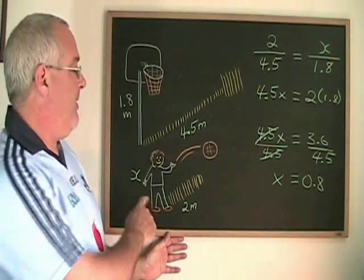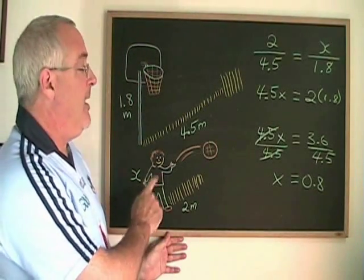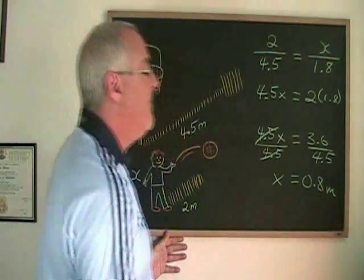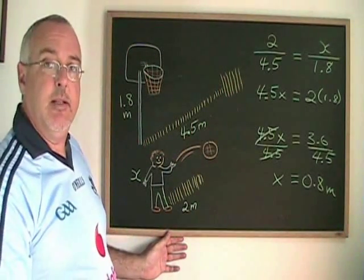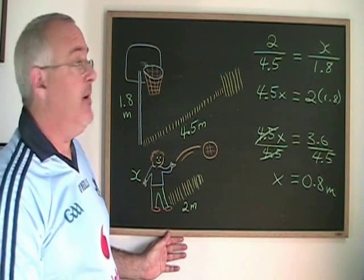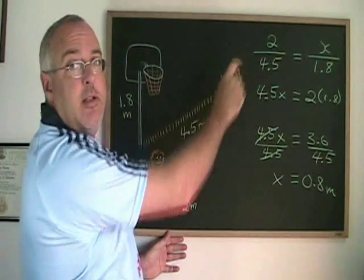If I am asked for the height of Hunter as my final answer, all that's left is to put the unit of measure, which is meters. And if I was asked instead to give the proportion that could be used to find the height of Hunter, this equation is that proportion.